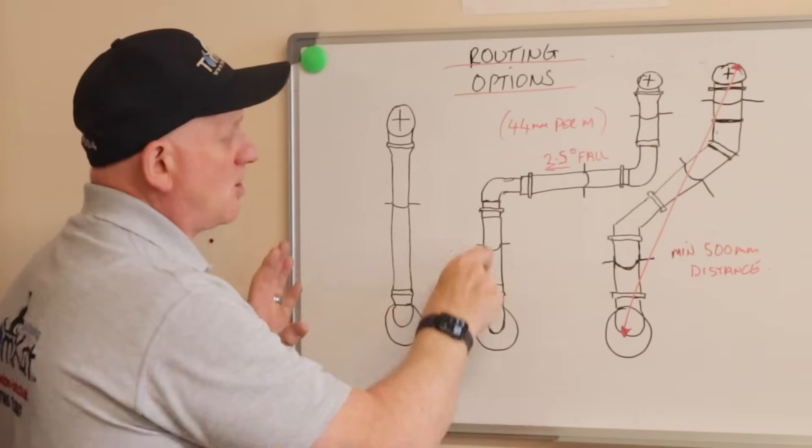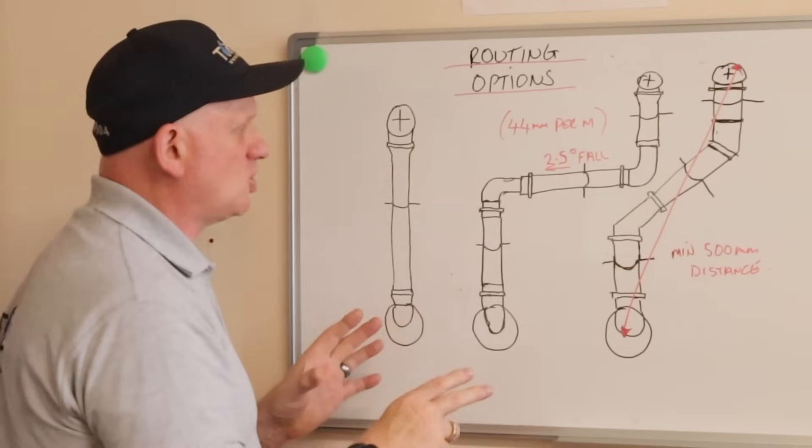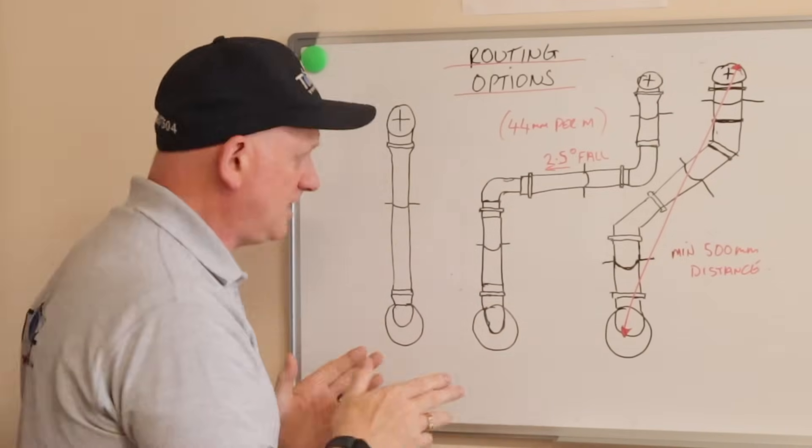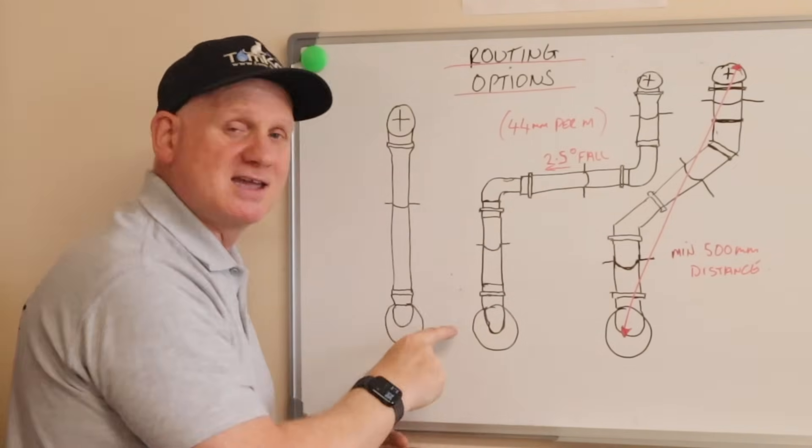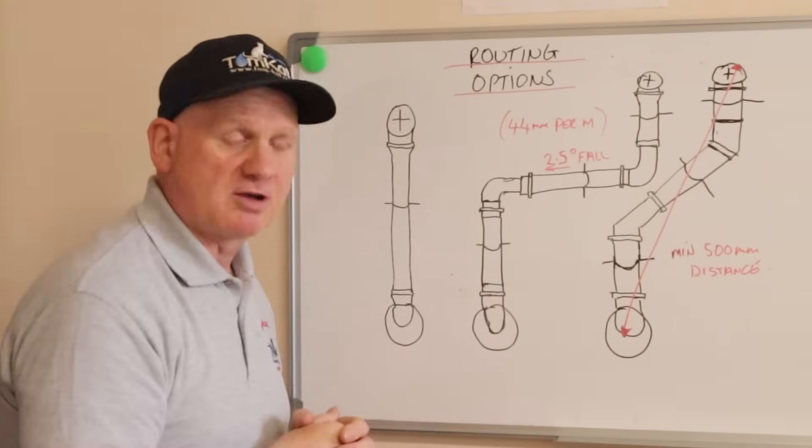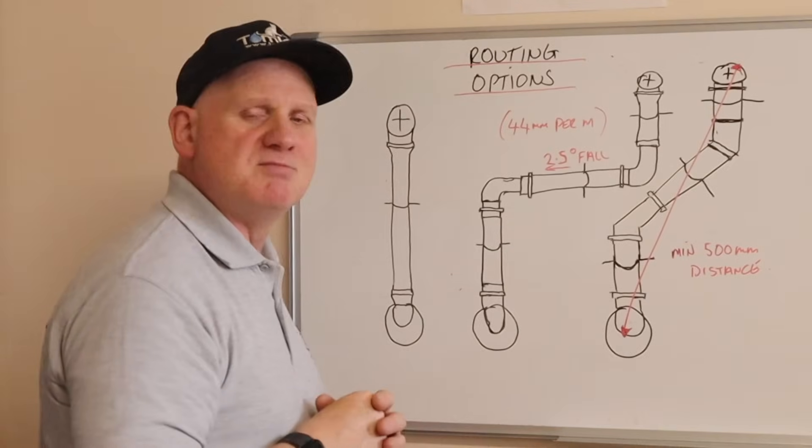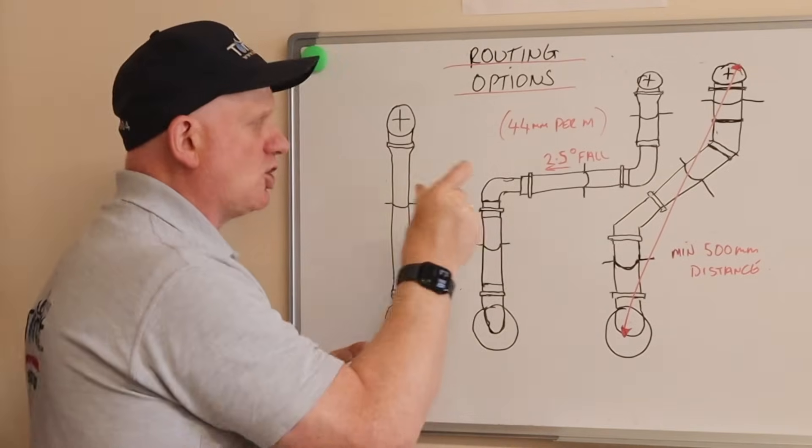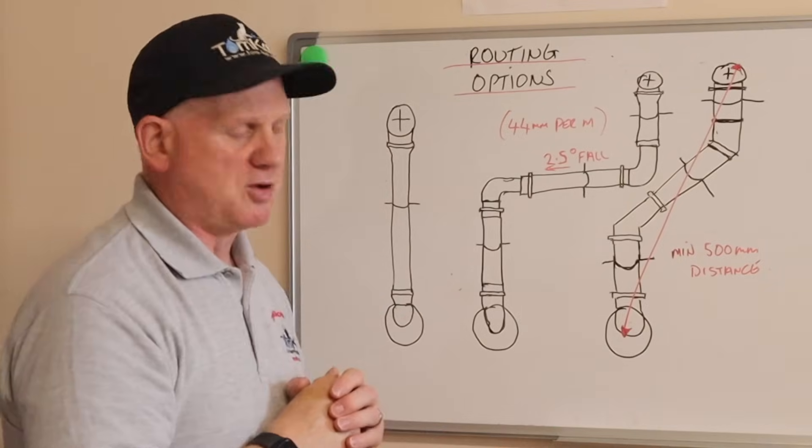So, when we go up and straight across and up again, we need to make sure we have a fall in the flue, and this is so the condensate can go back into the boiler, into the heat exchanger, and then out through the condensate trap and drain. We need a minimum of 44mm per metre, or 2.5 degrees, fall back to the boiler.